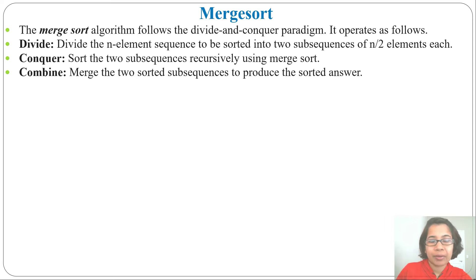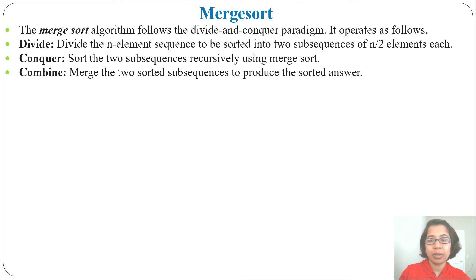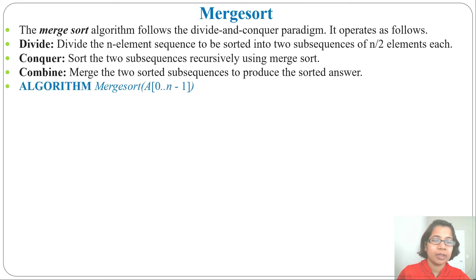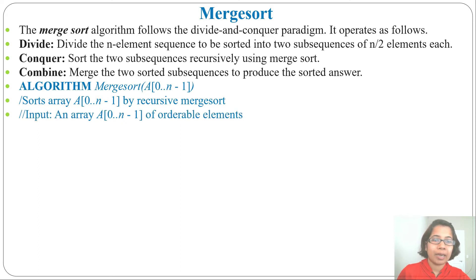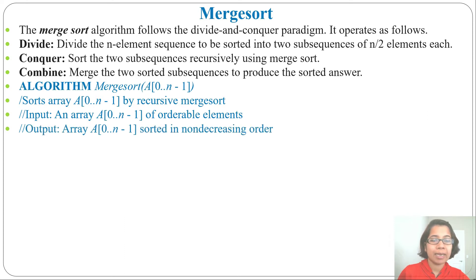So first we divide, then we sort each subsequence, then we combine the solution and get the solution for the whole array of n elements. Let's discuss the merge sort algorithm. Sort array A[0] to A[n-1] by recursive merge sort. Input: one array A[0] to A[n-1] with index. Output: the same array in increasing order.